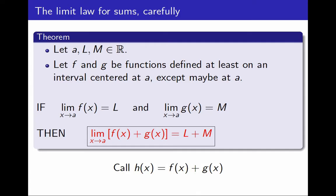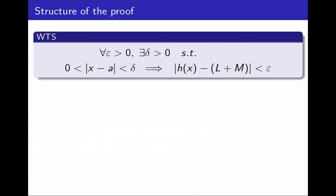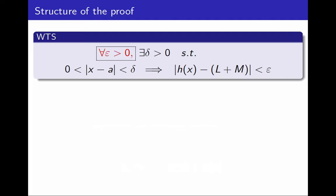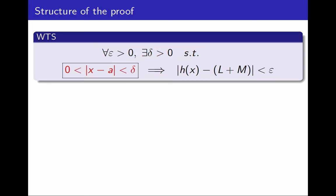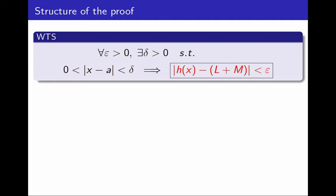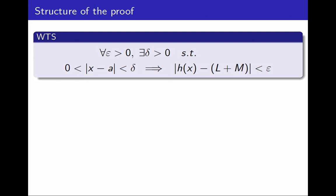So I will have to use the definition of limit. This is what I want to show: for every epsilon positive, there exists a delta positive, such that if the distance between x and a is between 0 and delta, then the distance between h and l plus m is less than epsilon. And since this is what I want to prove, I know what the structure of my proof should look like — it should correspond to this statement.